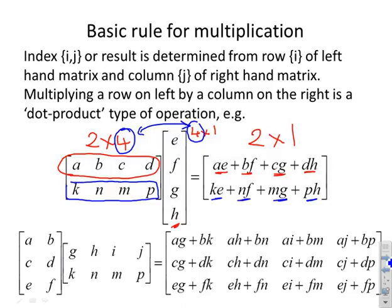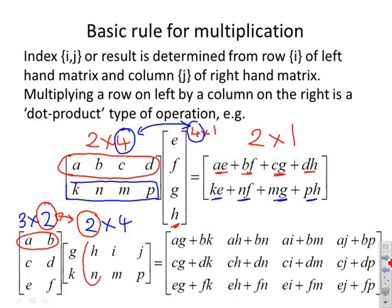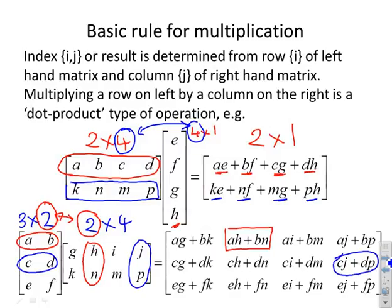A slightly more difficult example: the left-hand matrix is 3×2 and the right-hand matrix is 2×4. The column dimension of the left matches the row dimension of the right, so multiplication is defined. For example, the (1,2) element: take row 1 from the left and column 2 from the right — that gives ah + bn. For the (2,4) element: take row 2 from the left and column 4 from the right — that gives cj + dp.